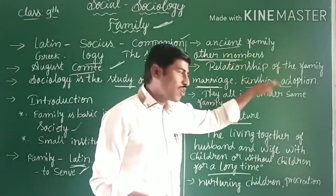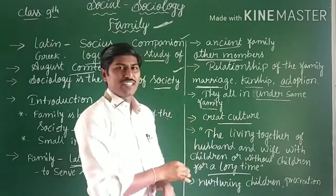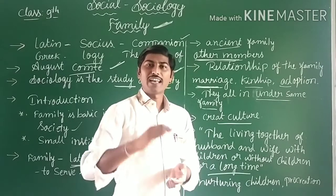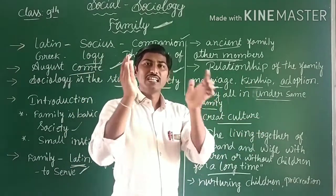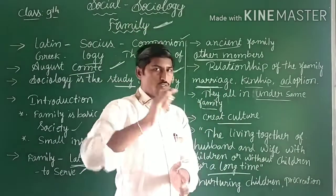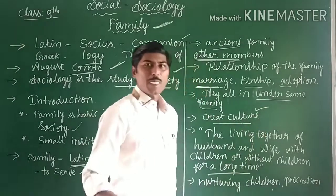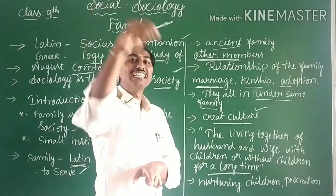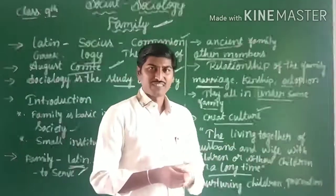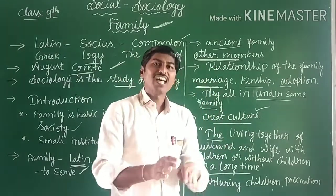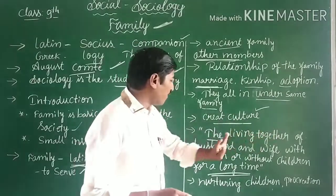So the relationship of the family is determined by kinship, marriage, and adoption. All family members — husband and wife, parents, children, siblings, and grandparents — live under the same roof. The family's main role is to create culture. The meaning of family is the living together of husband and wife with or without children.